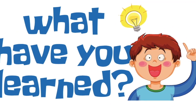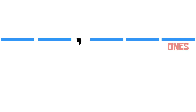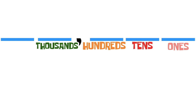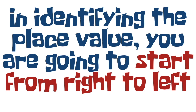What have you learned? Place value is the position of a digit in the number. In a 5-digit number, the first digit from the right is ones, then the second digit is tens, the third digit is hundreds, the fourth digit is thousands, and the last digit from the right is ten thousands. That is the place value of a 5-digit number. And lastly, in identifying the place value, you are going to start from right to left.